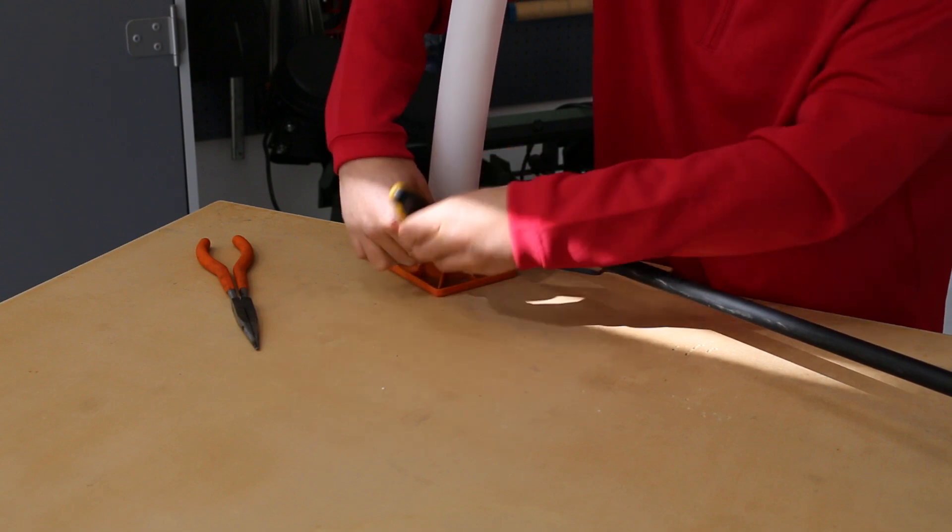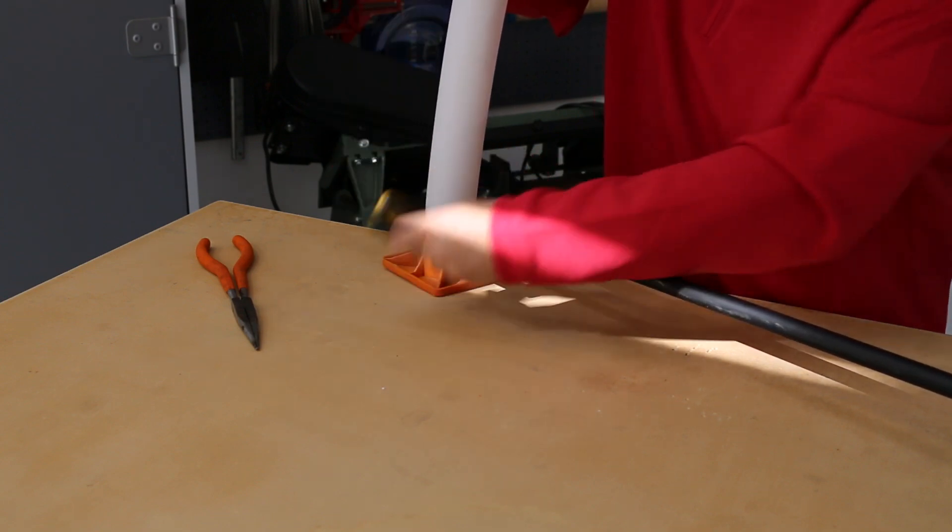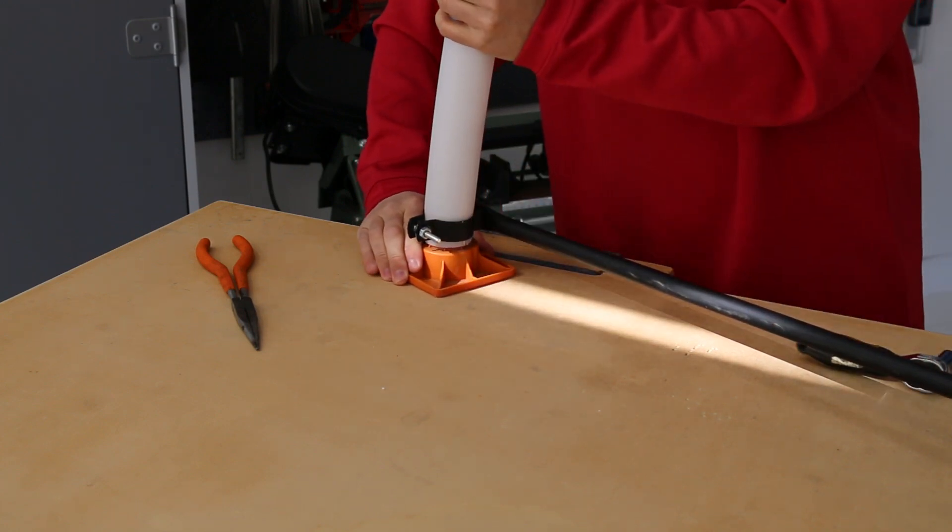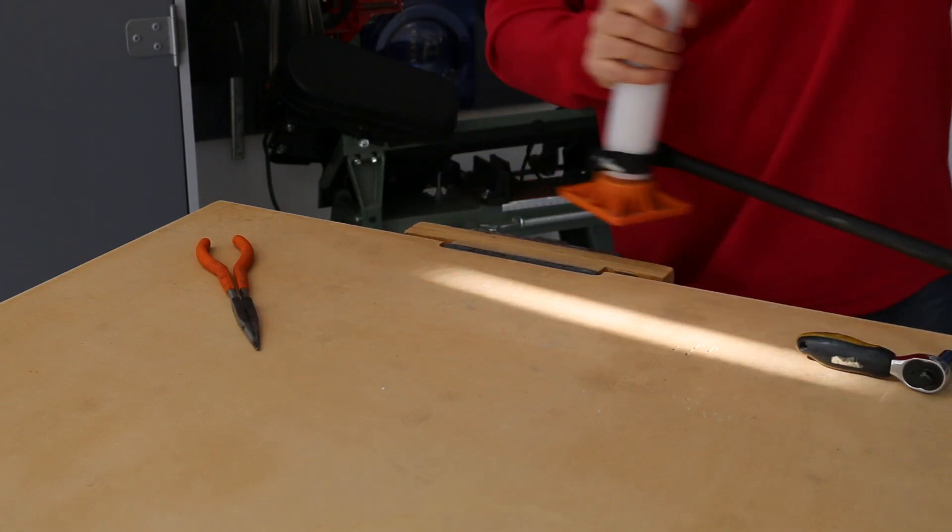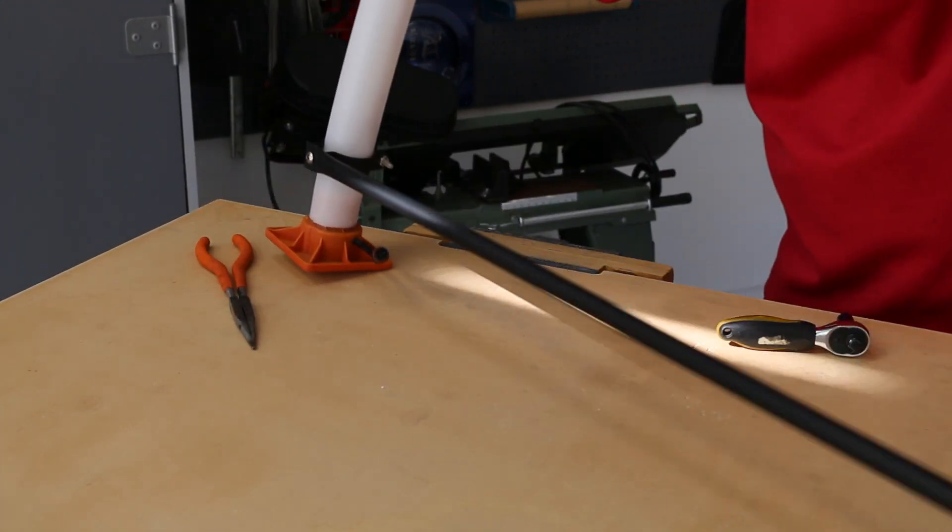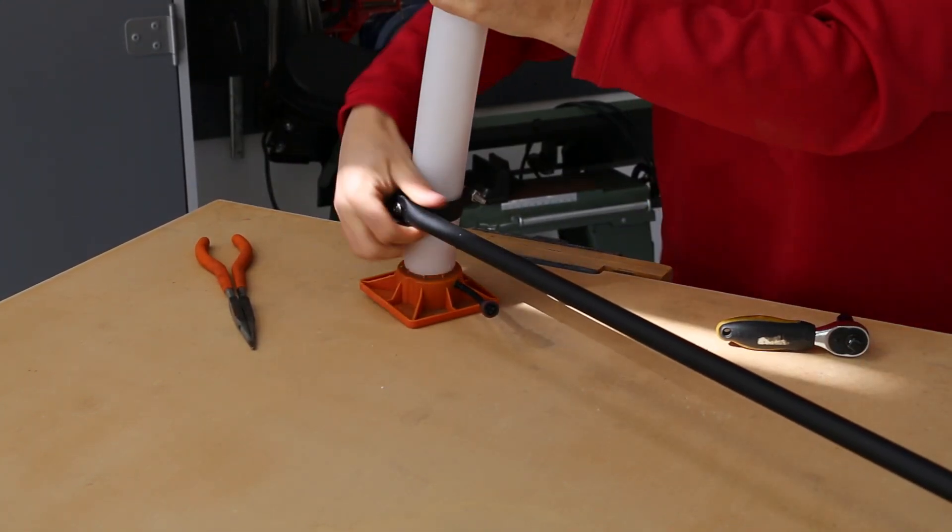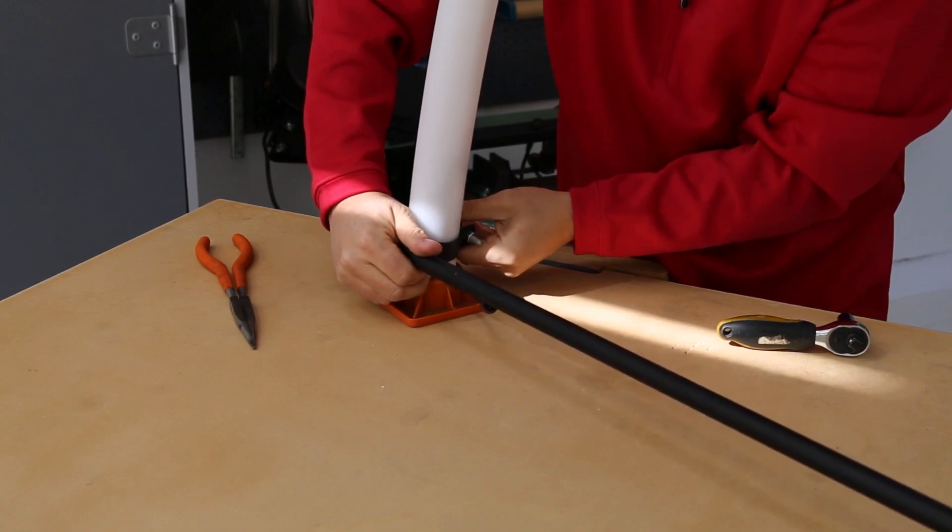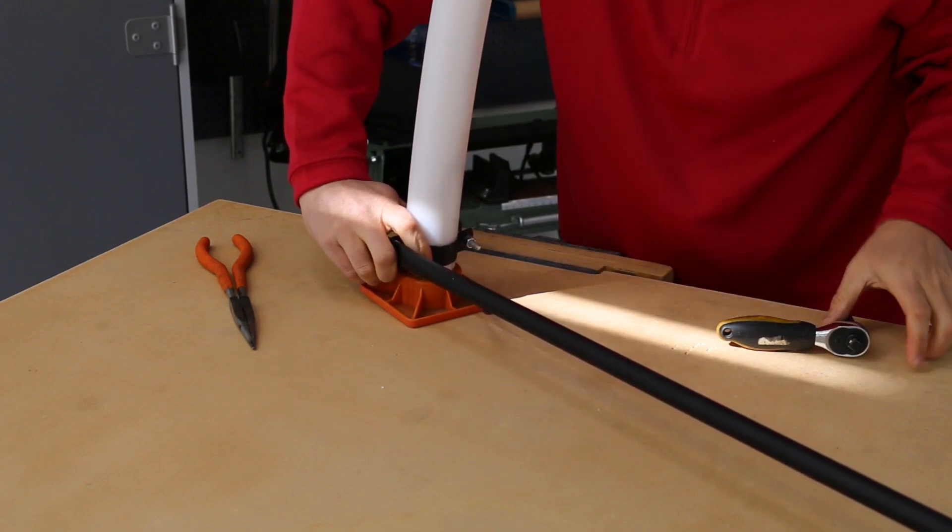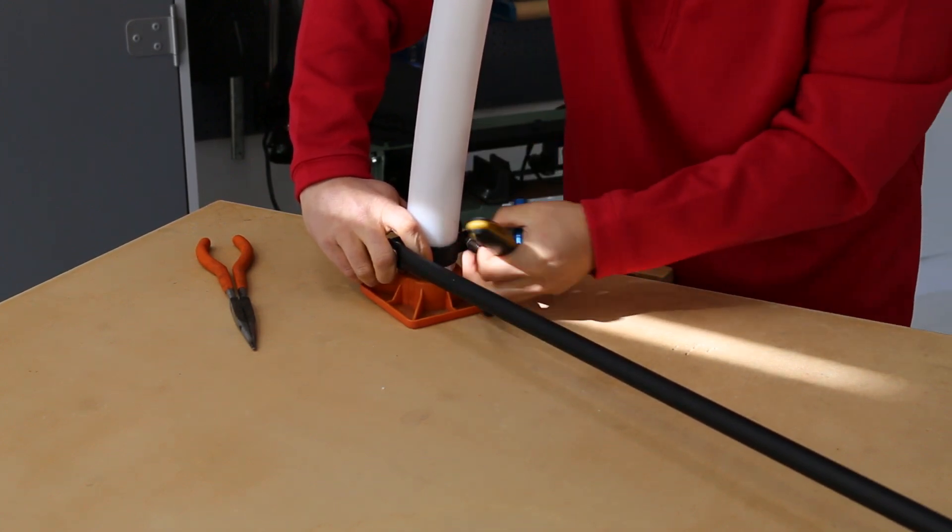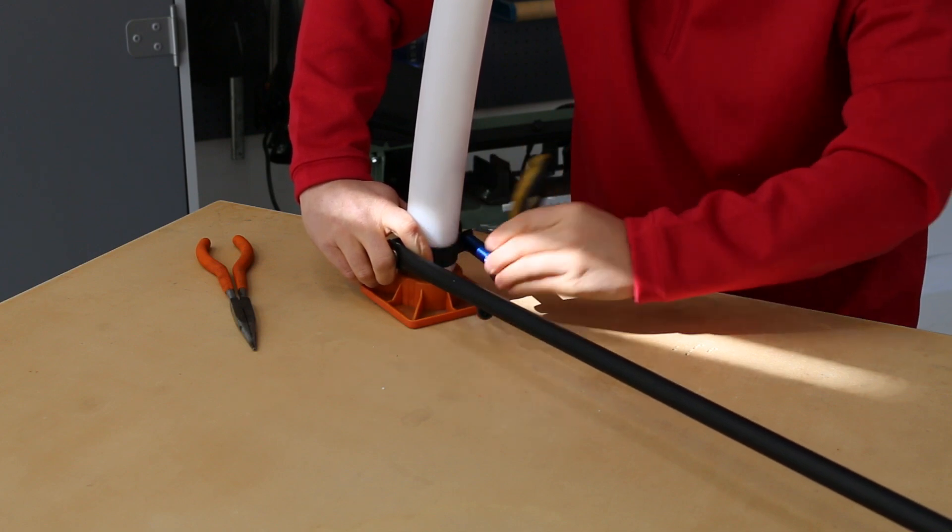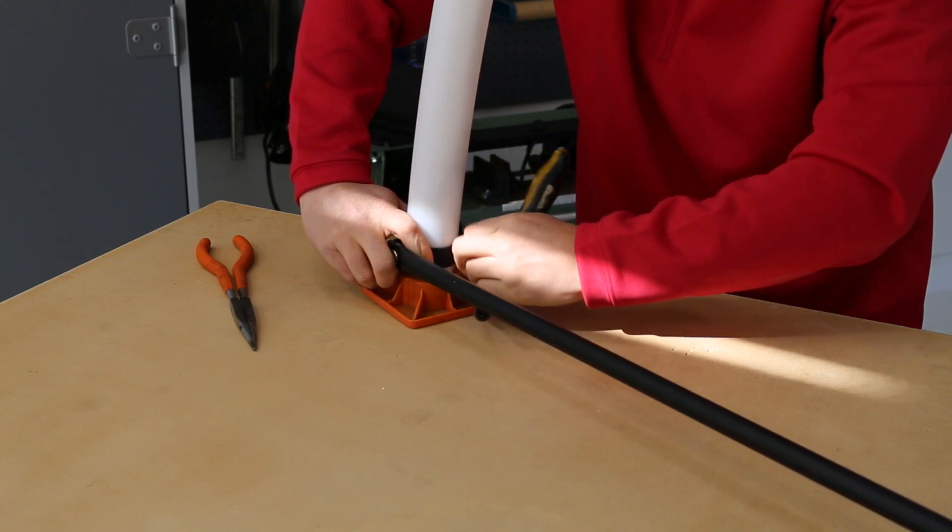So I now finalize the positioning of everything and tighten the bolt so now it's very secure on there. I then will move to the other side, readjust if needed this clamp as well, put it into the right position, and tighten the bolt accordingly.